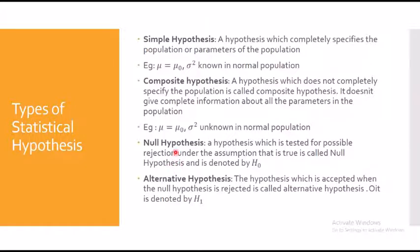Now, what is the null hypothesis? A hypothesis which is tested for possible rejection under the assumption that it is true is called a null hypothesis. It is the simplest form of hypothesis and asserts that there is no real difference between the sample and the population in the particular matter under consideration. The word 'null' means invalid, void, or amounting to nothing — any observed difference is considered accidental, unimportant, and arising out of fluctuations of sampling.